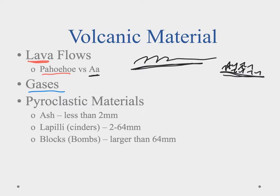We also have pyroclastic materials — solids ejected from the volcano. There are three classes based on size: ash is less than two millimeters; lapilli, or cinders, are between two and 64 millimeters; and anything larger than 64 millimeters is called a block if found on the ground, or a bomb if it goes airborne. So it's not just a nice lava flow — volcanoes also produce gases and pyroclastic materials.